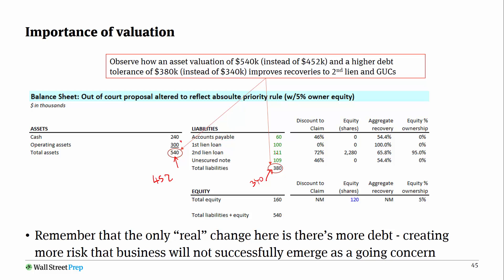All of a sudden, the second lien recoveries — which are a combination of both debt recovery and equity — have shot up to 65.8%. The on-paper recoveries of the accounts payable and the unsecured notes have also gone up; they've actually gotten more debt reinstated. This is because your tolerance for debt is higher, so these creditors are getting more paper exchanged, and your equity is valued more because the entire business is worth more than $452.